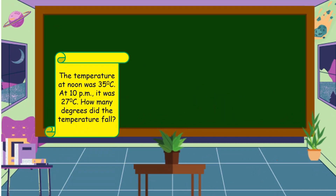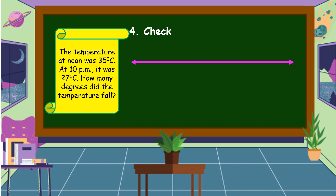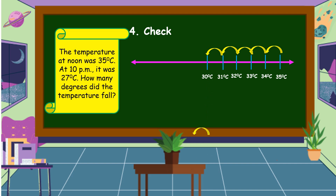The last step is we are going to check using the number line. We start from 35 degrees Celsius — the temperature at noon — and at 10 p.m. it was 27 degrees Celsius. We count how many degrees the temperature fell: 1, 2, 3, 4, 5, 6, 7, and 8. Therefore, the temperature fell by 8 degrees, confirming our answer is correct.